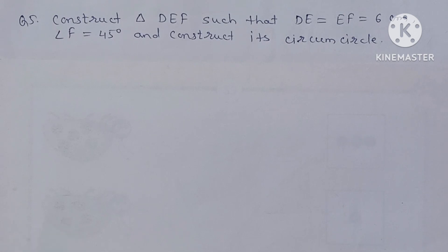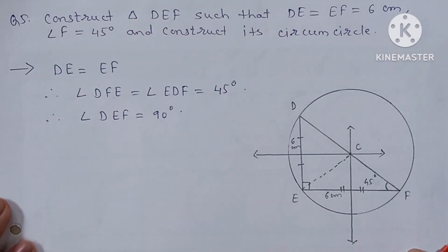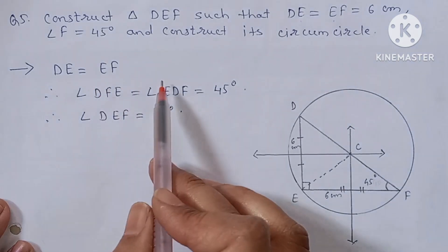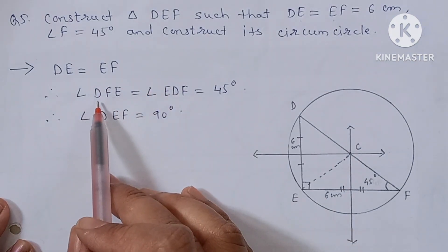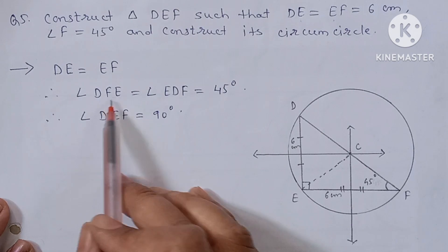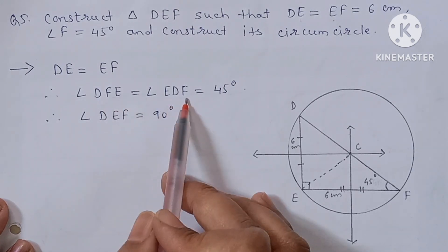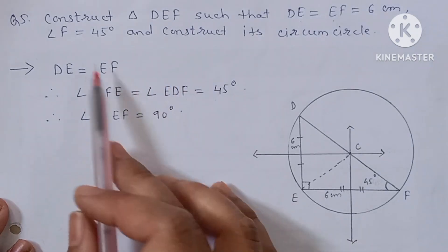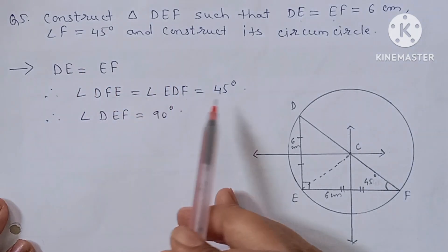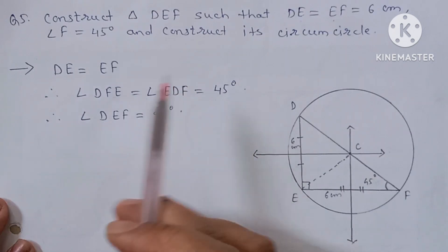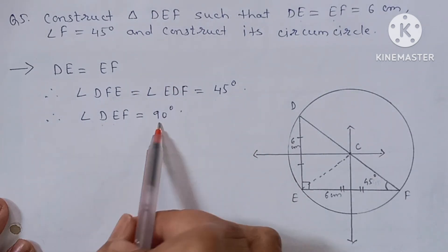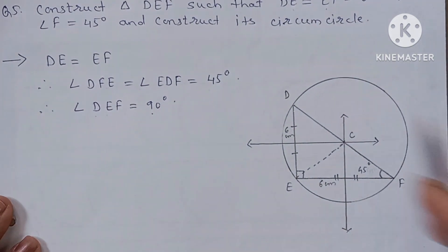Next question: Construct triangle DEF such that DE equals EF equals 6 centimeters, angle F equals 45 degrees, and construct its circumcircle. Since DE and EF are equal, angle DFE equals angle EDF, and both are 45 degrees. Therefore angle DEF is equal to 90 degrees. This is your rough figure.